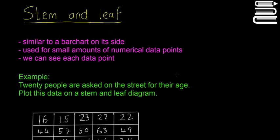The next way we're going to look at graphing data is a stem and leaf diagram. A stem and leaf diagram is similar to a bar chart on its side. We use it when we have small amounts of numerical data points, and it's useful because we can see each data point and the distribution of data.